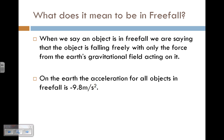On the Earth, because we know that Earth's gravitational field applies a certain amount of force to all objects, we can say that the acceleration for all objects in freefall is negative 9.8 meters per second squared. This is a really important number—you need to make sure you get this number down so that you can use it on your tests.